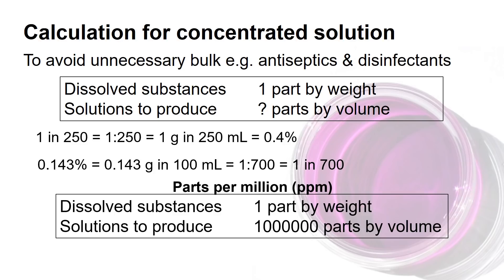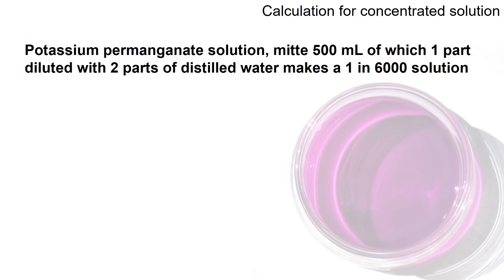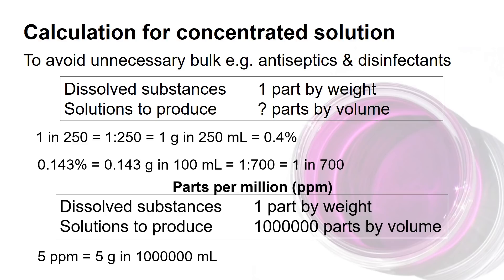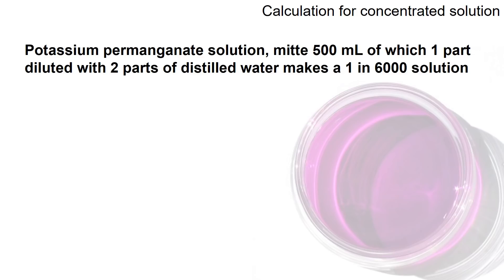There is another type of expression of unit called parts per million, or ppm. This is usually used for very, very diluted solutions. Parts per million means one part of the dissolved substance by weight in 1 million parts of volume. For example, 5 ppm means 5 grams in 1 million ml.